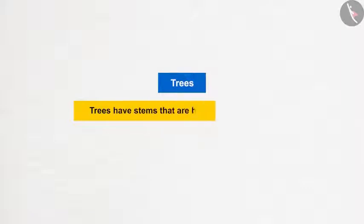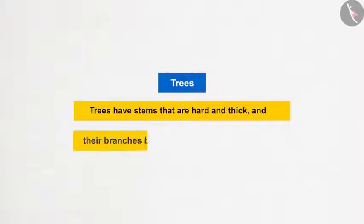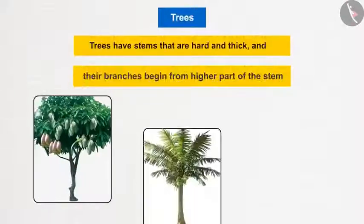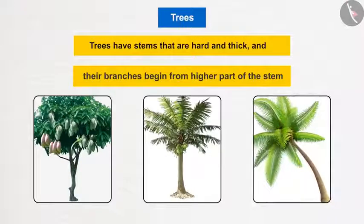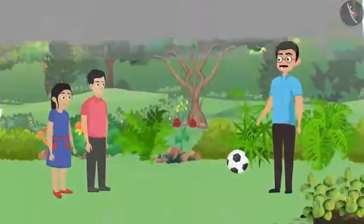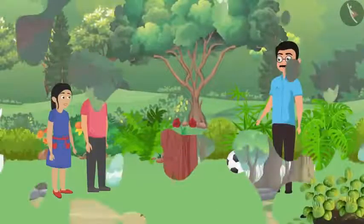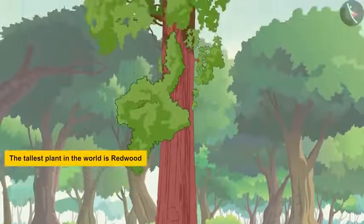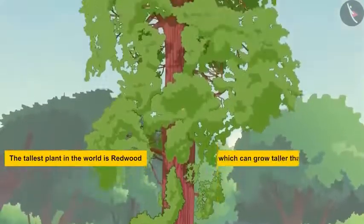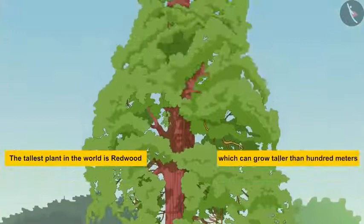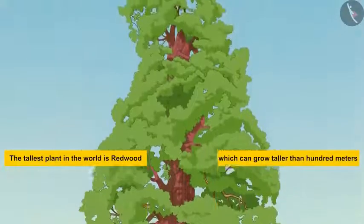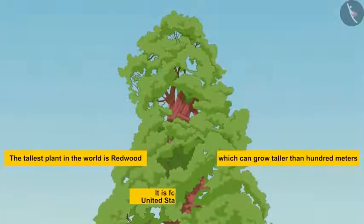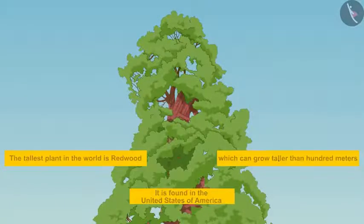The next type is trees — their stems are hard and thick, and branches begin from the higher part of the stem. Mango, dates, and coconut are examples. The tallest plant in the world is the redwood tree, which can grow taller than 100 meters — taller than a 30-floor building — found in the United States of America.